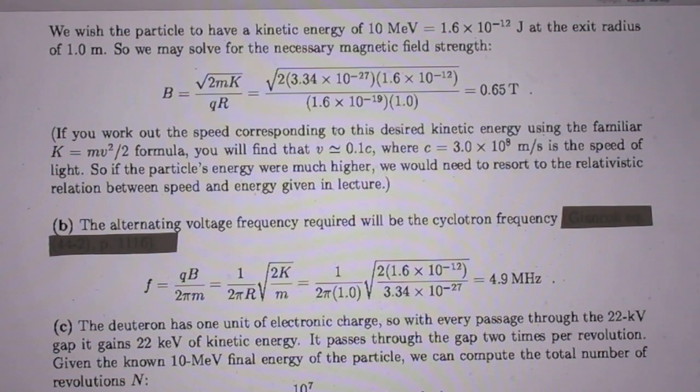If you work out the speed corresponding to this desired kinetic energy, using the familiar equation that K is one half mV squared, you will find that V is approximately equal to one tenth of the speed of light.